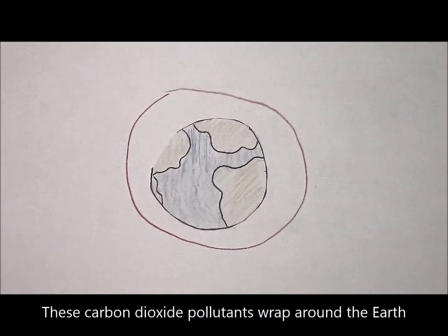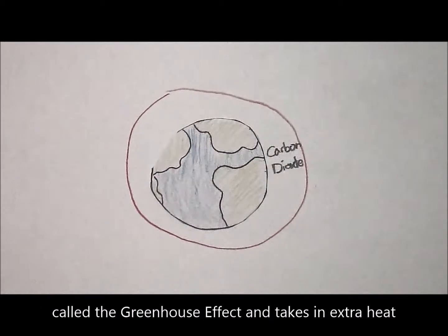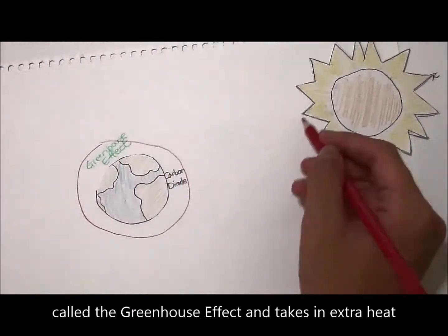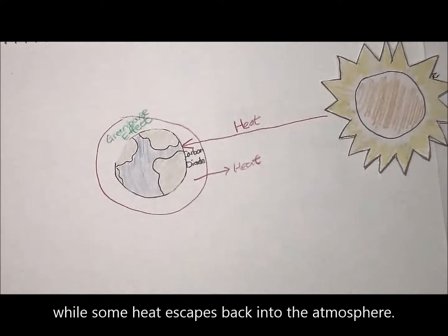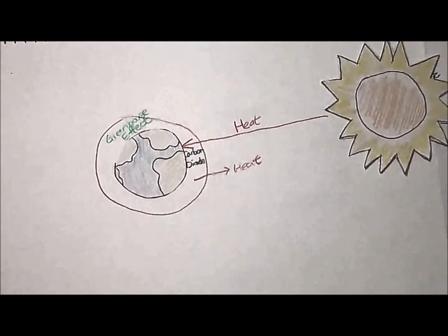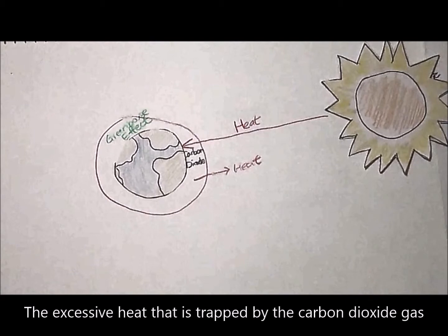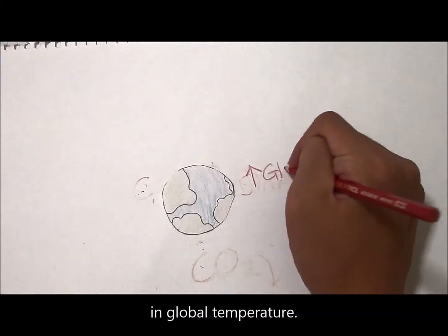These carbon dioxide pollutants wrap around the Earth, called the greenhouse effect, and takes in extra heat while some heat escapes back into the atmosphere. The heat that is trapped by the carbon dioxide gas returns back to Earth and causes a small increase in global temperature.